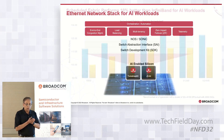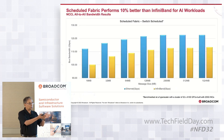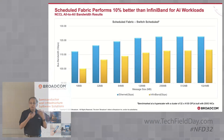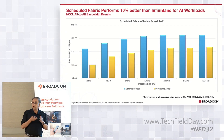Frequently our customers come and ask: we have invested in Ethernet, we want to use Ethernet, but how does it compare to something like InfiniBand? Here are a couple of examples that our customers ran — not internal test benchmarks, but tests done at hyperscalers. Here is an example: a NCCL all-to-all benchmark comparing the Jericho 3 or Jericho 2 fabric with that of InfiniBand.